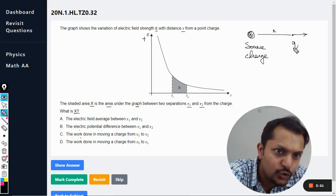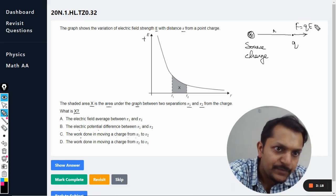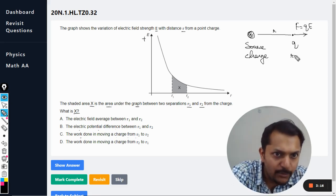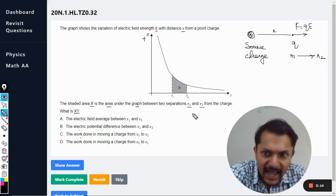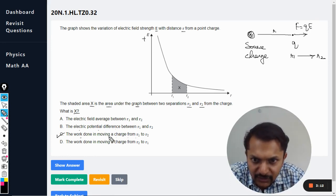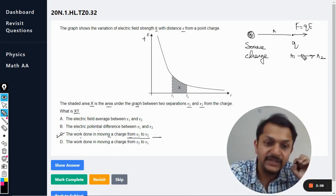If there is a charge q, the force will be qE. It is moving from r1 to r2, and this option is correct - the work done in moving a charge from r1 to r2 will be this.